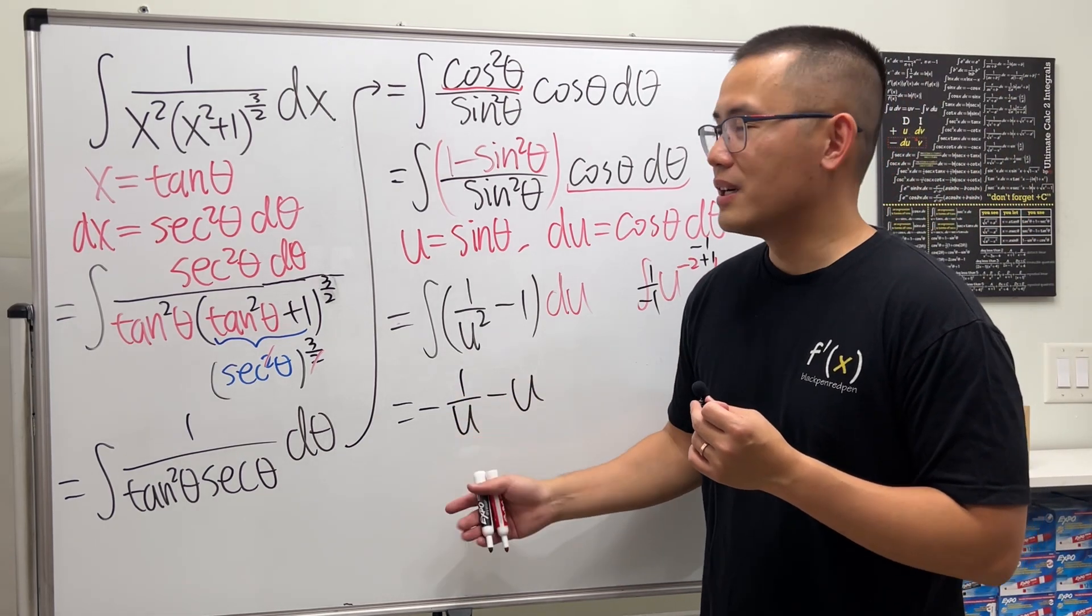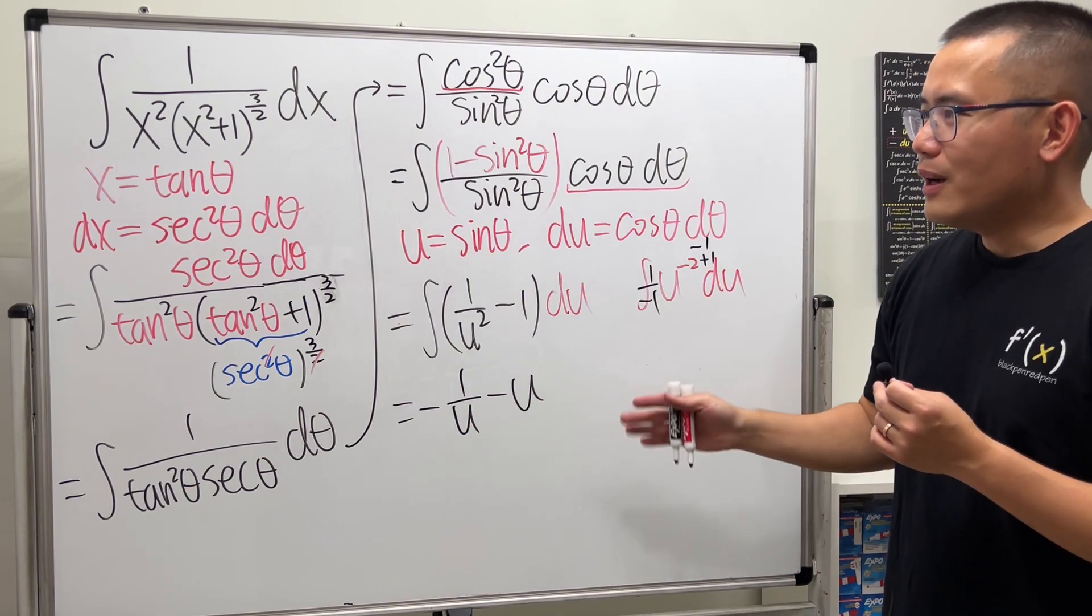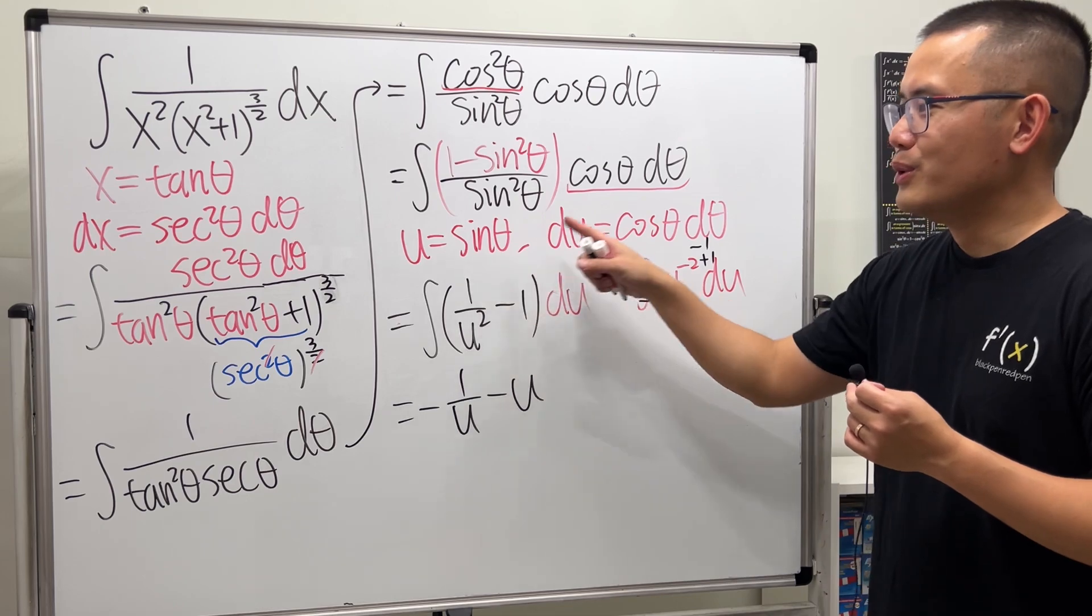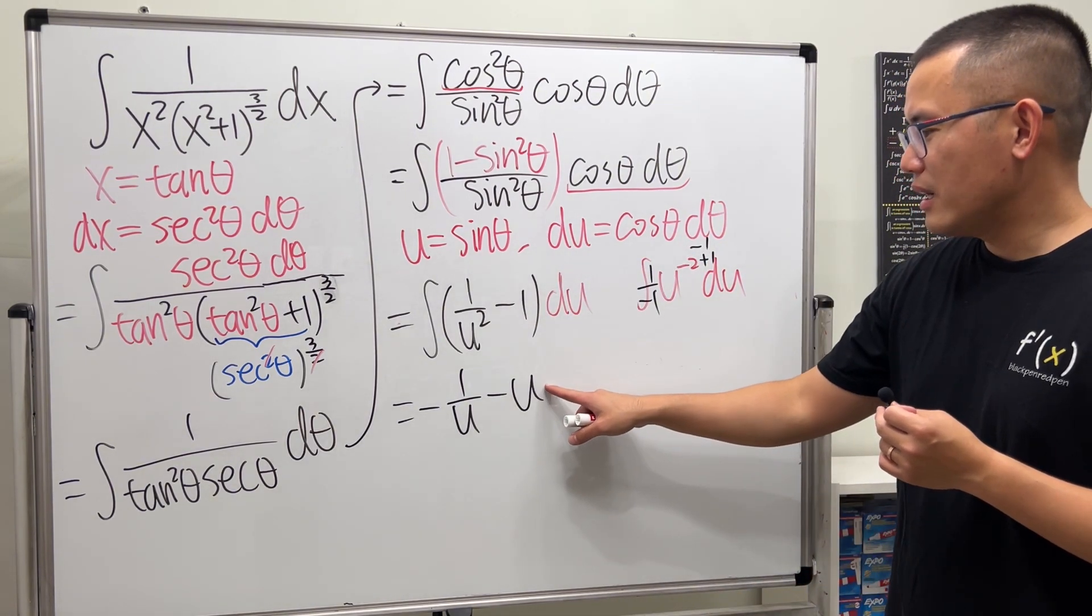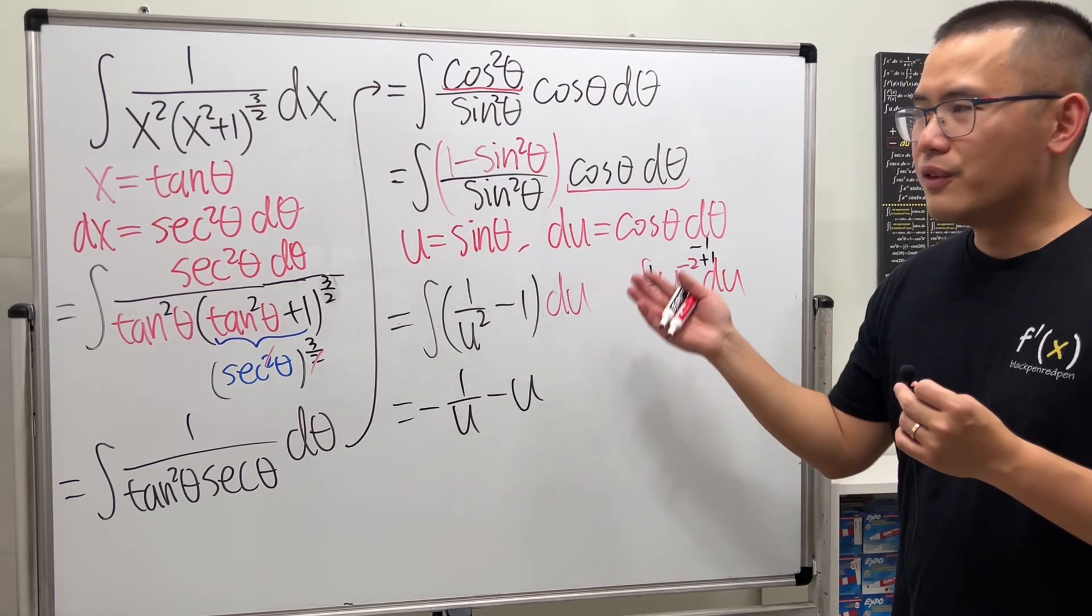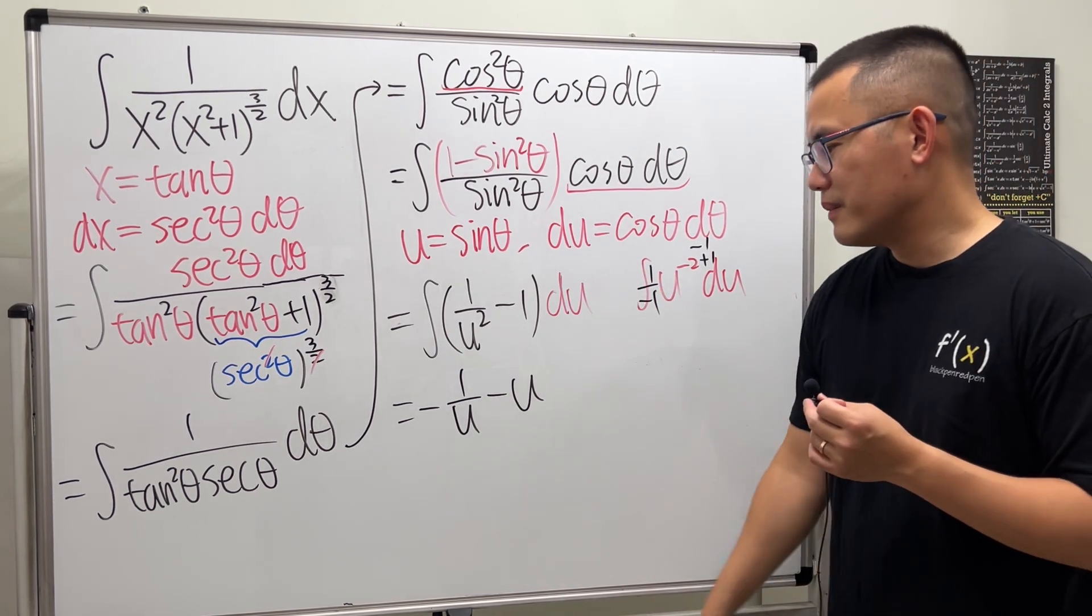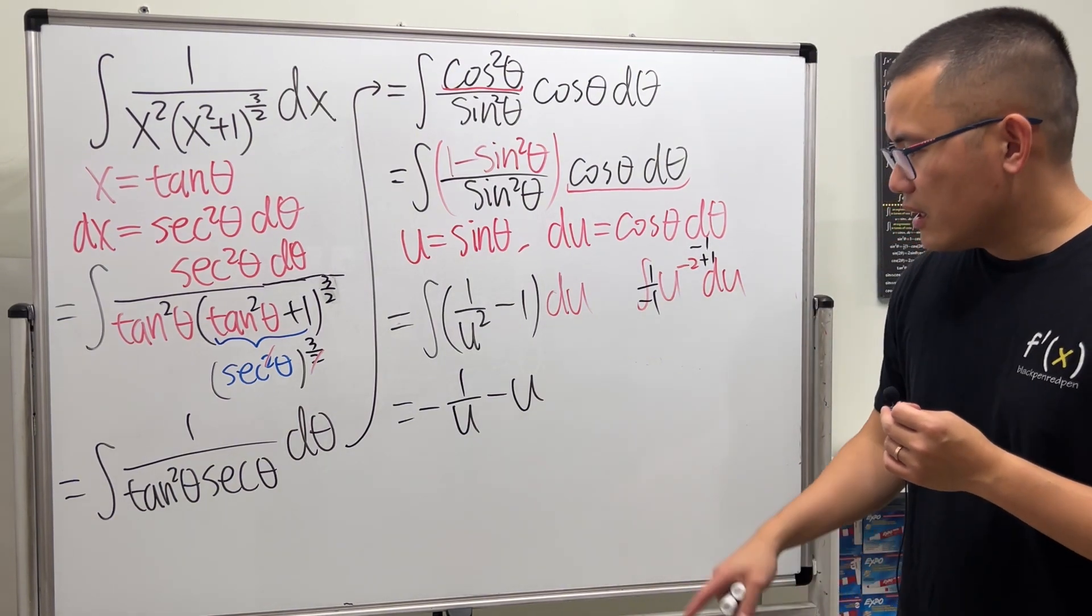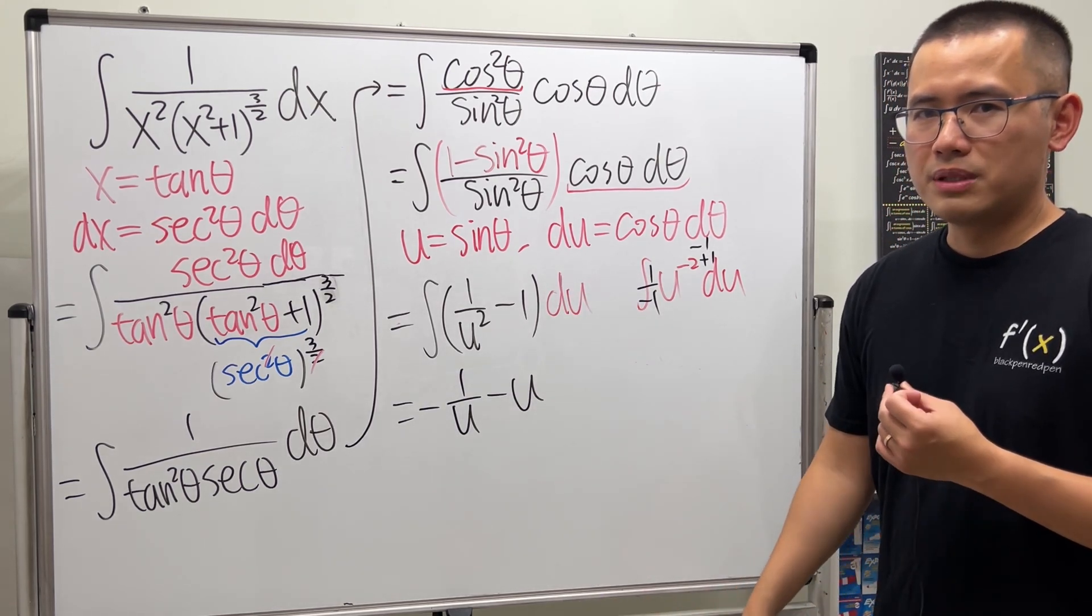We are not there yet for the answer because we still have to go back to the x-world. For this question, we did both trig substitution and u-substitution. Some people might say, please put a plus C here. In my opinion, for indefinite integrals you can just put the plus C at the very end. But if a teacher really wants you to put on a plus C right after an integration step, then just go ahead and put it on.